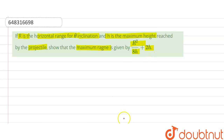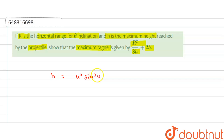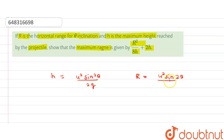H is the maximum height, and maximum height is given by H = u² sin²θ / 2g. This is equation 1. Also, the range is given by R = u² sin2θ / g. This is equation 2.